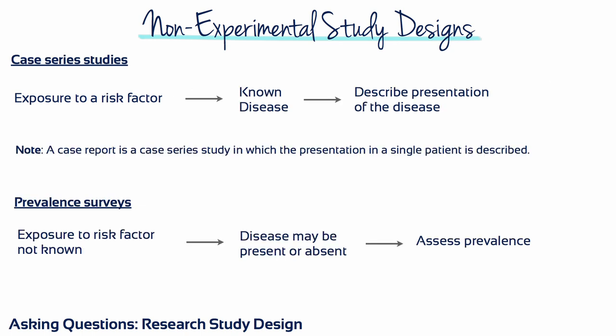Case-series studies are used to describe the presentation of a disease. A case report is a special kind of case-series study in which the presentation is of a single patient. Prevalence surveys are conducted to assess the prevalence of a specific disease in a specific time and a specific place.